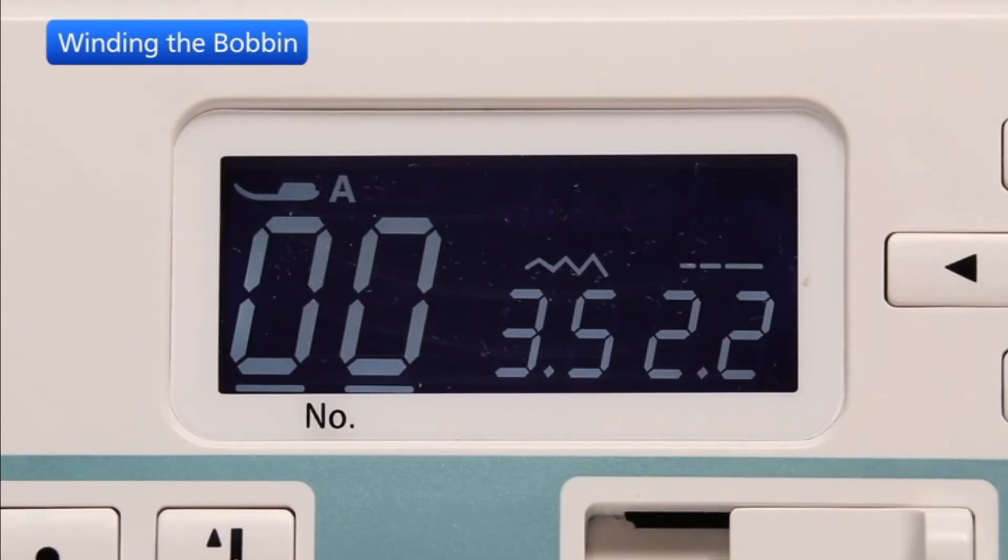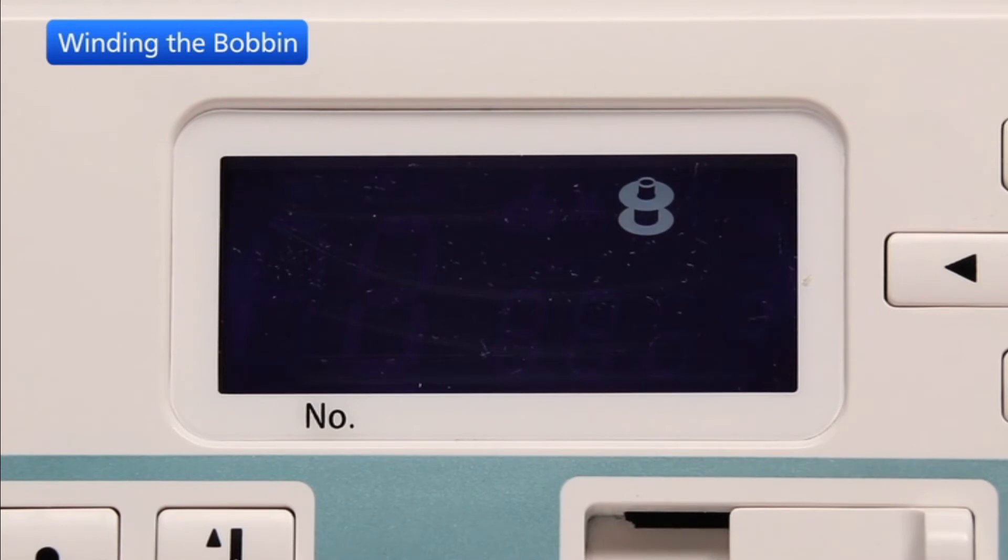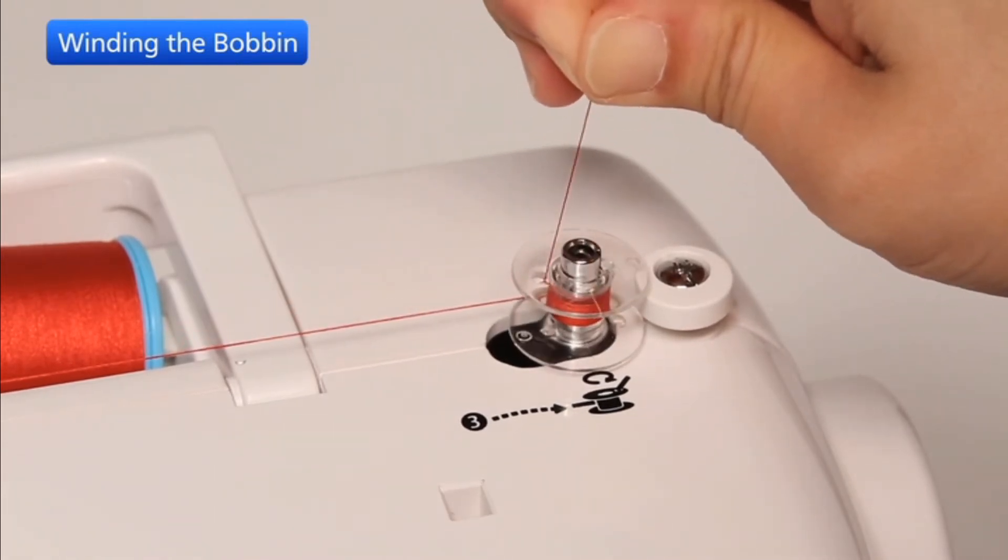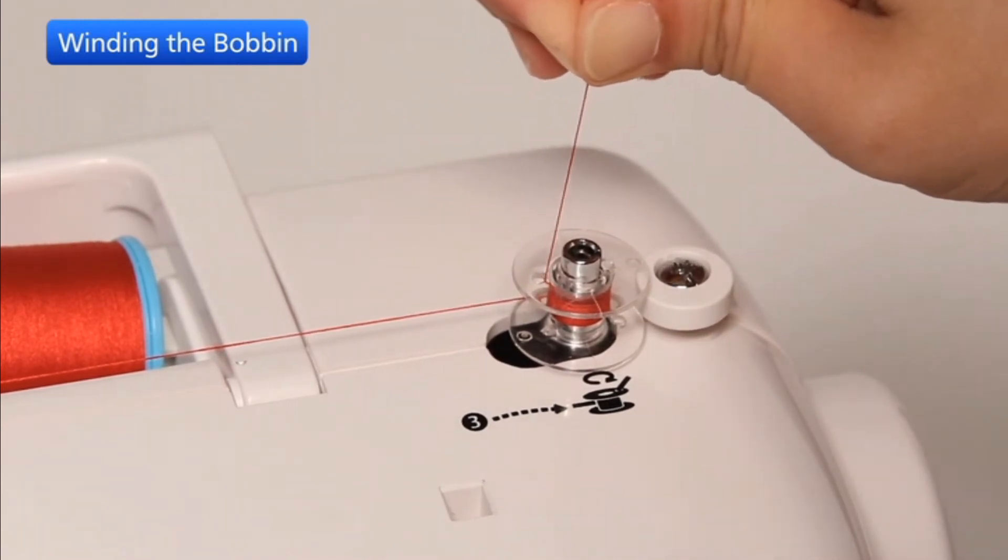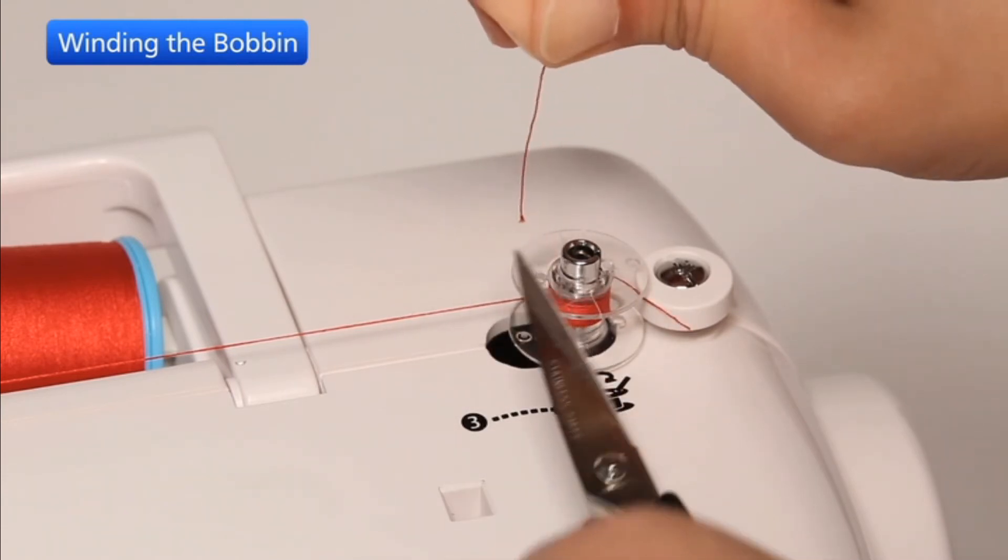The bobbin icon appears on the LCD display. With the free end of the thread held in your hand, start the machine. Stop the machine when it has wound a few layers and then cut the thread close to the hole in the bobbin.